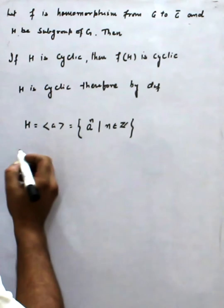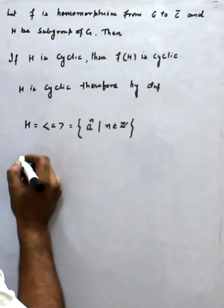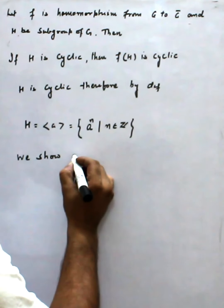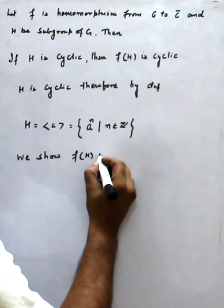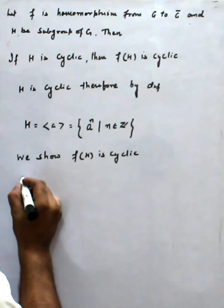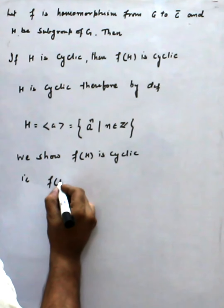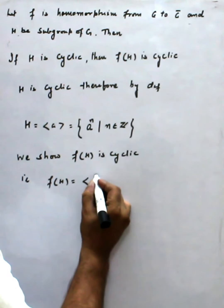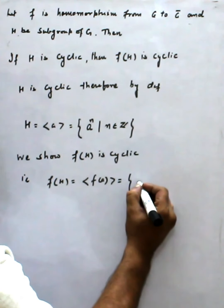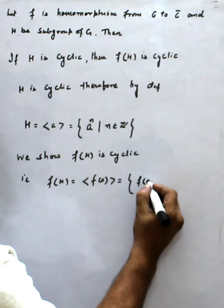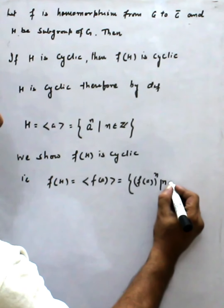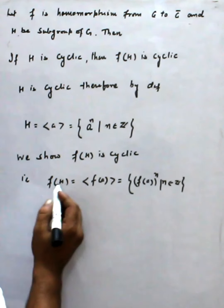That means we show F(H) is cyclic. That is, F(H) is generated by F(a), or you can say F(a) raised to n where n belong to Z. This we have to show.